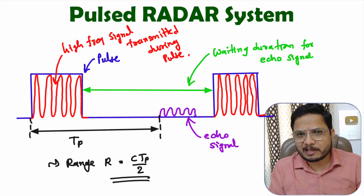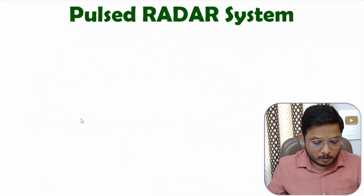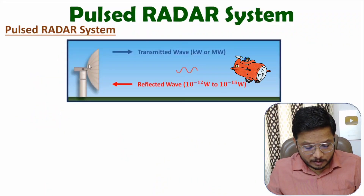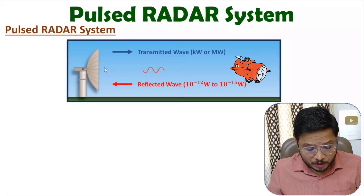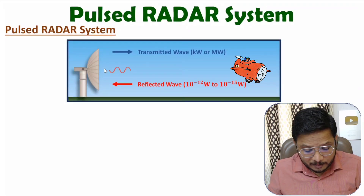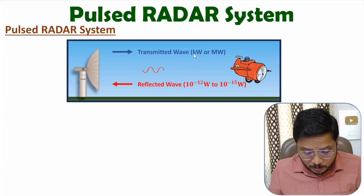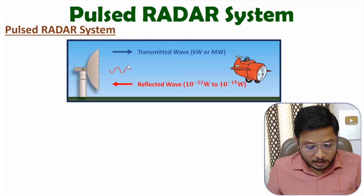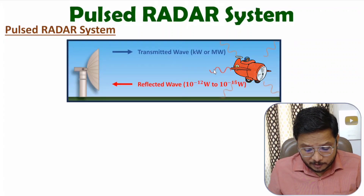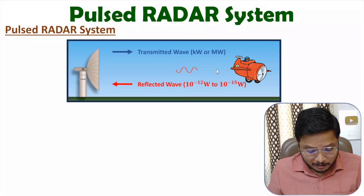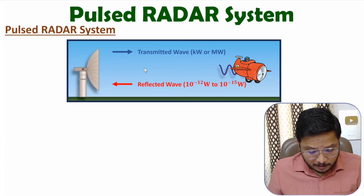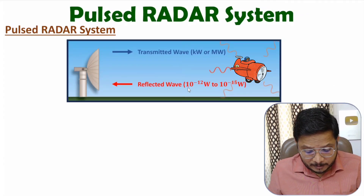Let me show it to you by animation. Here we have the pulsed radar system — by blue color, for a short duration it is transmitting a high frequency EM wave towards the target. The transmitted wave has power in terms of a few kilowatts to megawatts. From the target we have the reflected echo signal shown in red color going towards the radar, and that reflected echo signal has strength in terms of 10 to the power of minus 12 watts to 10 to the power of minus 15 watts.